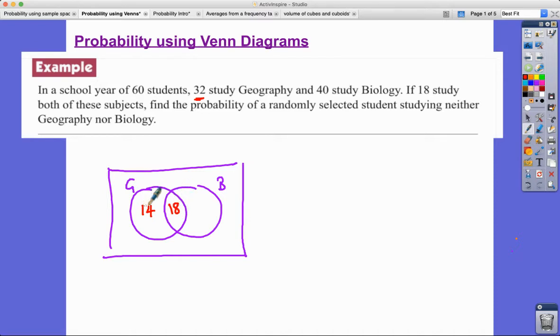And over this side I've already got 18 that do study some biology also do geography and I've got 40 in total that study biology so an extra 22 study just biology. So that's what that 22 represents - they study just biology, not in the intersection, they don't do geography as well.